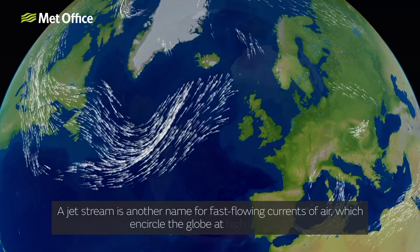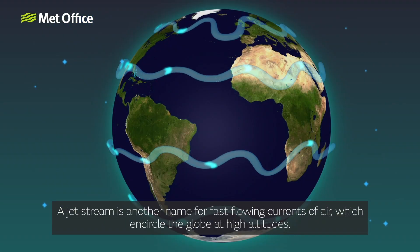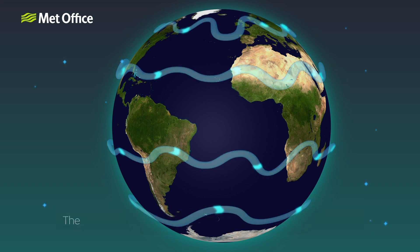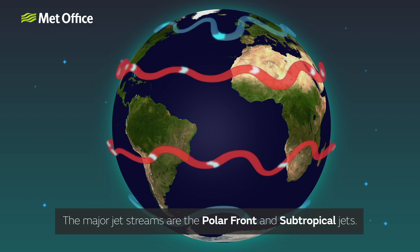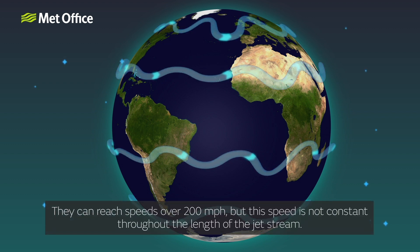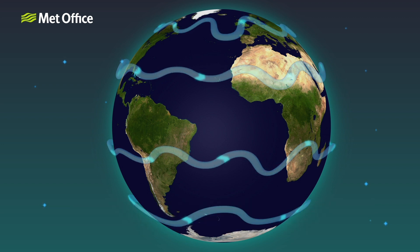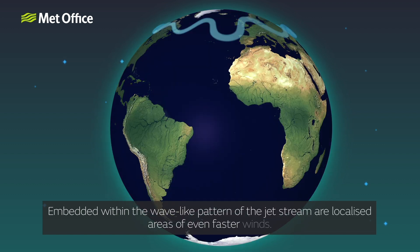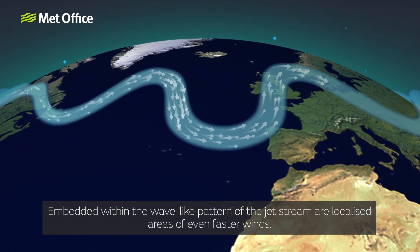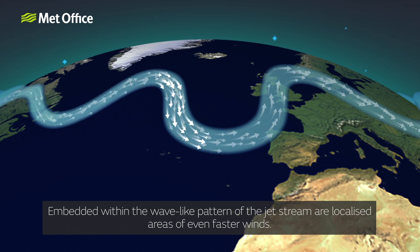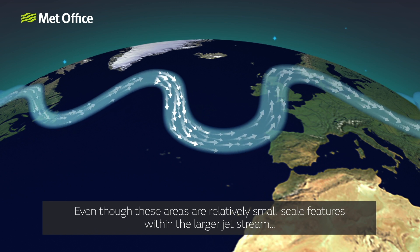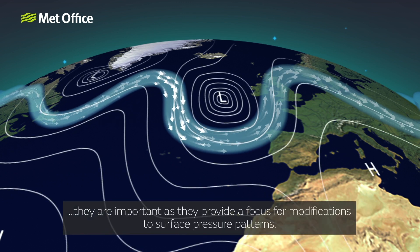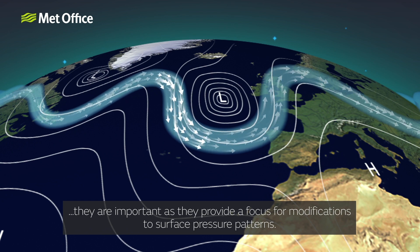A jet stream is another name for fast-flowing currents of air which encircle the globe at high altitudes. The major jet streams are the polar front and subtropical jets. They can reach speeds over 200 miles per hour, but this speed is not constant throughout the length of the jet stream. Embedded within the wave-like pattern of the jet stream are localised areas of even faster winds. Even though these areas are relatively small-scale features within the larger jet stream, they are important as they provide a focus for modifications to surface pressure patterns.